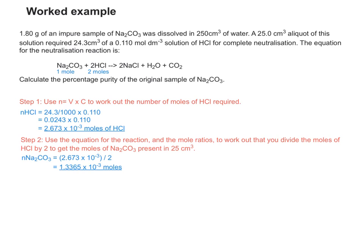However, what I've got to remember here is that the number of moles present in 25 cm³ is not the same as the number of moles present in the original 1.80 grams of my impure sample. If you remember, that was actually dissolved in 250 cm³ of water, which is 10 times as much as 25 cm³. So now we've got to multiply the number of moles of sodium carbonate in 25 cm³ by 10.